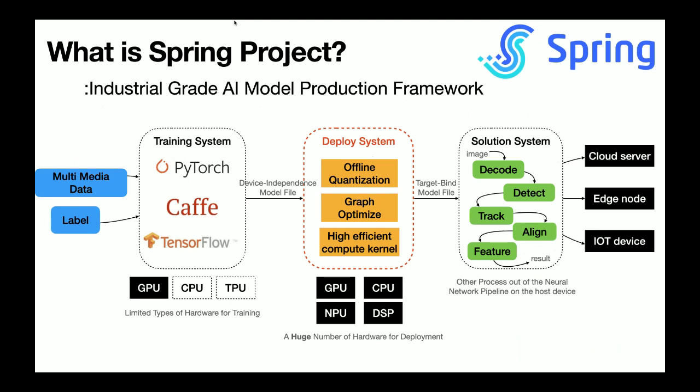The production process of Spring includes three parts: model training system, model deploying system, and solution system. The model training system is mainly responsible for the process from data reading to model training and conversion. The solution system is responsible for combining deep learning models of different tasks to complete a product function, such as video phase recognition and traffic surveillance recognition.